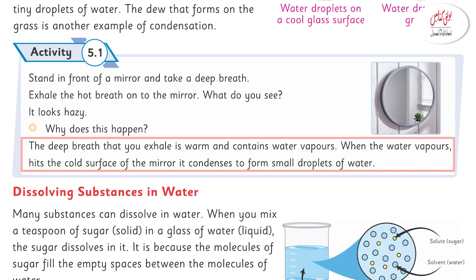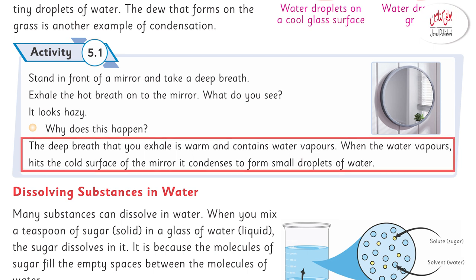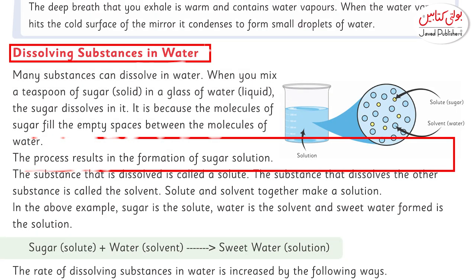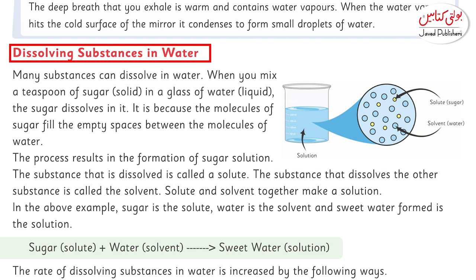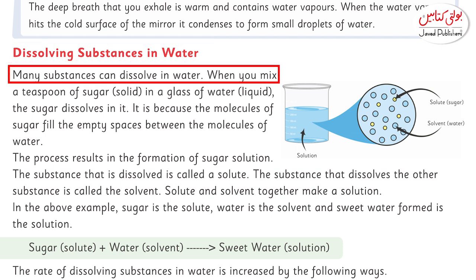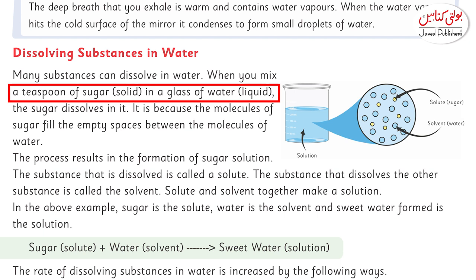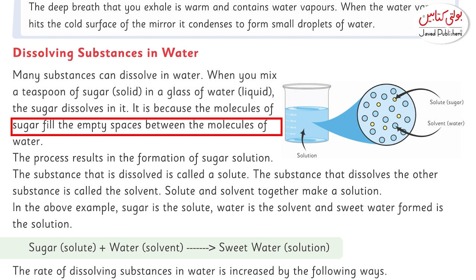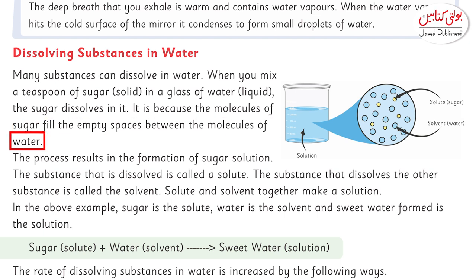This is how condensation happens. Now, dissolving substances in water, page number 41: Many substances can dissolve in water. When you mix a teaspoon of sugar in a glass of water, the sugar dissolves because the molecules of sugar fill the empty spaces in the molecules of water.